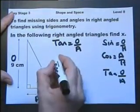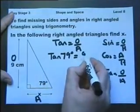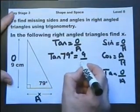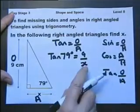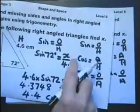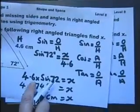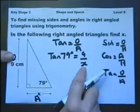Fill the information in. The angle is 79 degrees. The opposite is 9 centimetres. And the adjacent is what I want to find. Now this time, where is the unknown? It's underneath. When the unknown was on top, we multiply it. When the unknown is underneath, we divide.